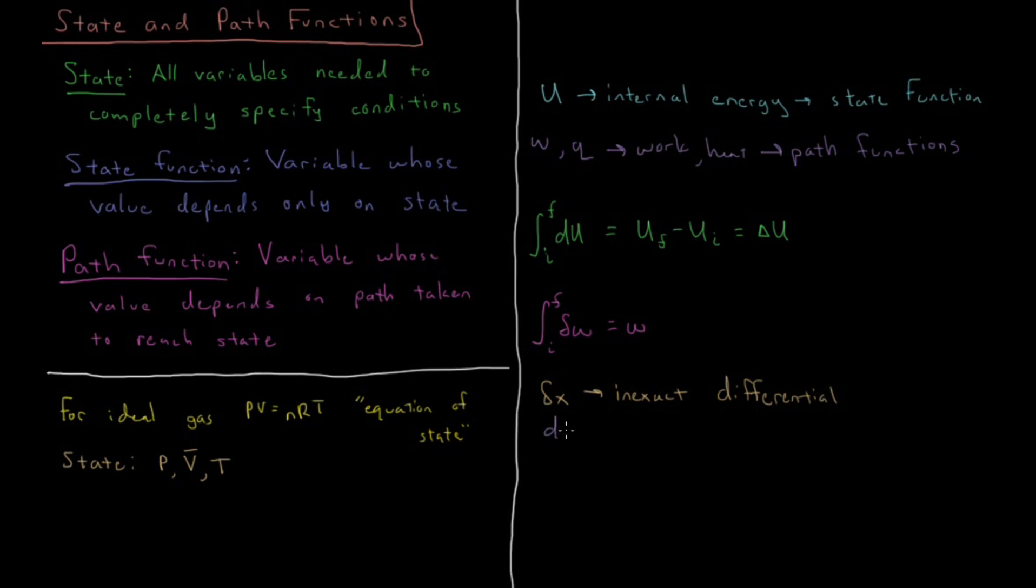We saw dx being an exact differential. So the only difference is that these are for path functions and these are for state functions. We have to worry about what the path was between the initial and final states to determine the work during that entire process. And similarly for heat, the same scenario is true—dq equals q.